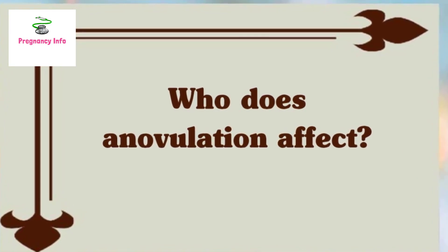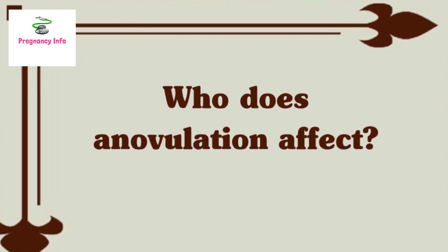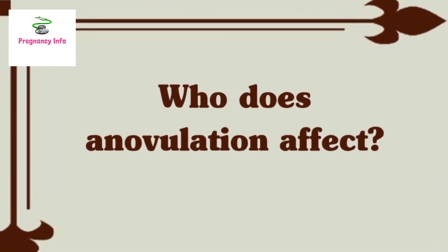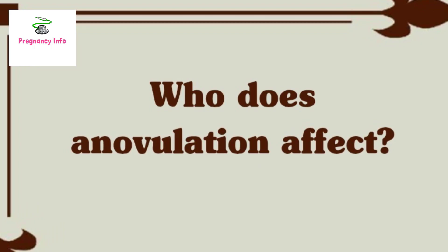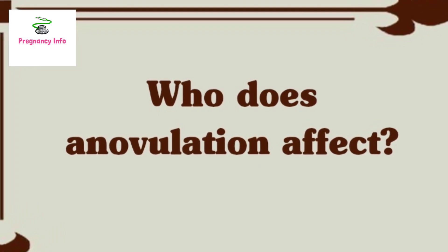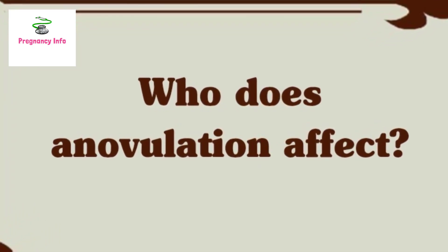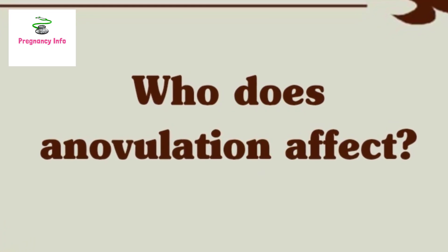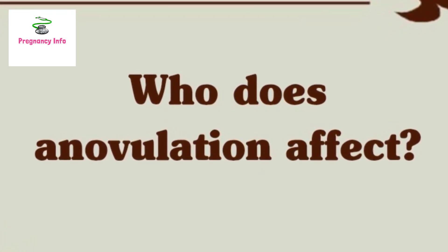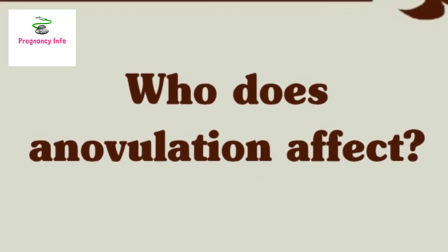Anovulation can affect anyone who has ovaries and is of childbearing age, which on average is between the ages of 12 and 51. You are more likely to experience anovulation if you have just started getting periods, are in perimenopause, have polycystic ovary syndrome (PCOS), or have a very low body mass index.